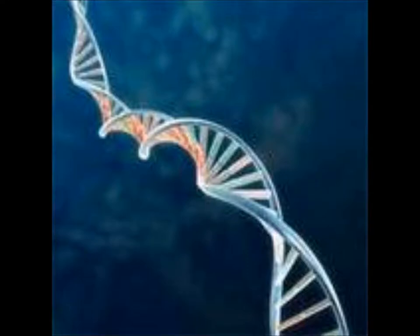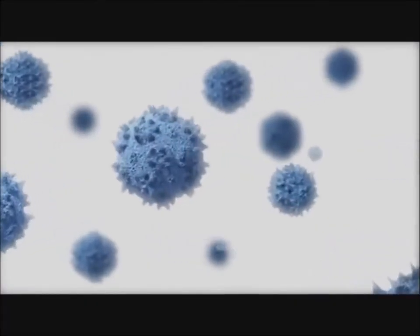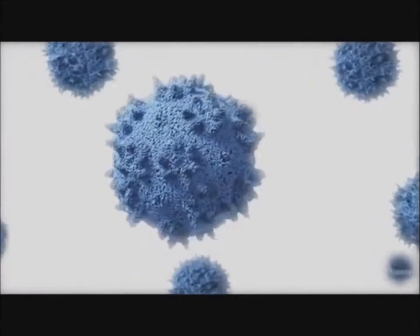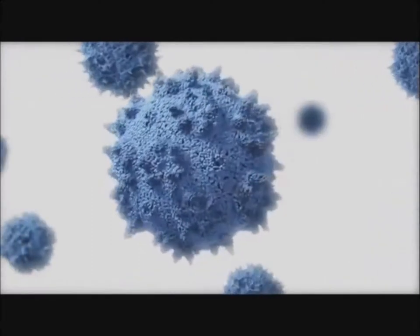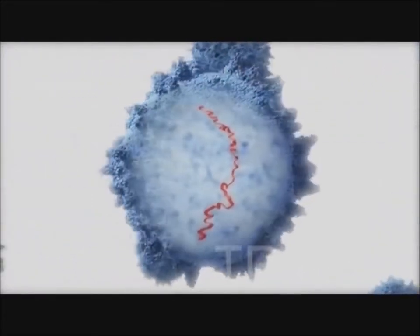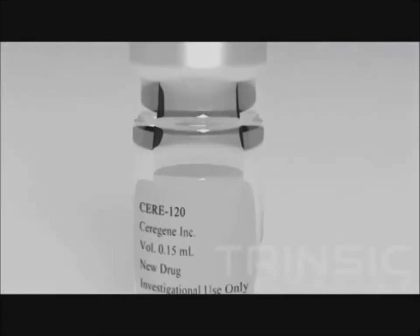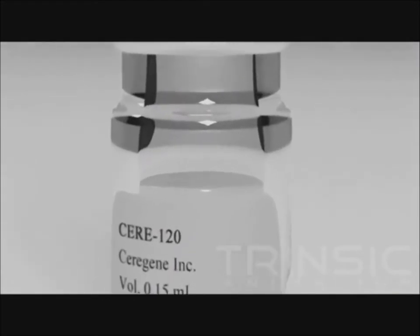Ever wish diseases could be cured by replacing a mutated gene with a healthy one? Well, now this is possible. Although the process is long, it can be explained pretty simply. A healthy gene is inserted into the genome to replace the abnormal disease-causing gene. It can be used to help with the effects of different types of cancer, and it is also said to be used as a pharmaceutical agent for the same purposes.